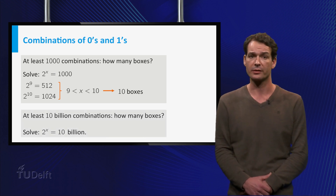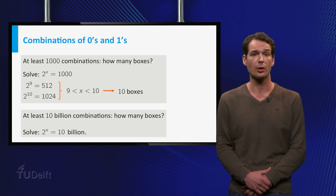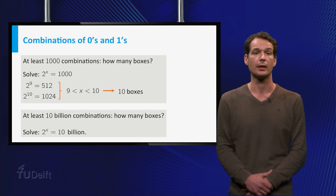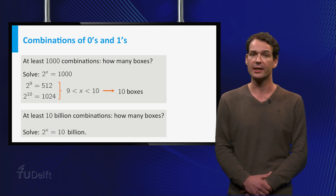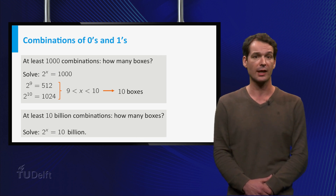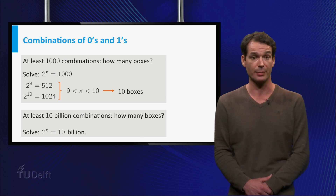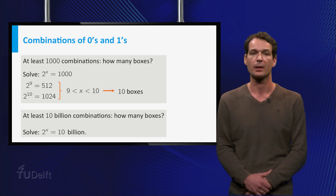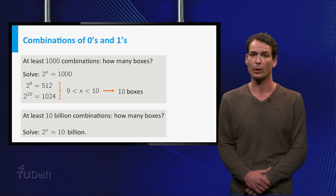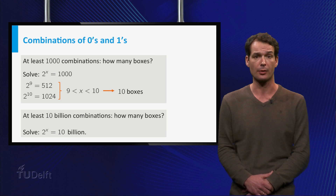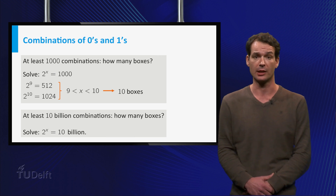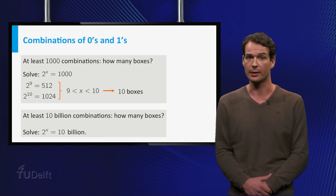But what if you want to make at least 10 billion combinations? You really don't want to calculate successive powers of 2 until you pass 10 billion. So, we want to solve the equation 2 to the power x is equal to 10 billion.